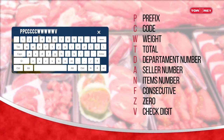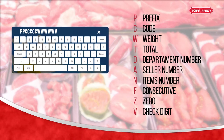P equals prefix, one digit. C equals product code, six digits. W equals weight, five digits. V equals check digit, one digit.